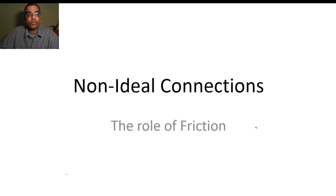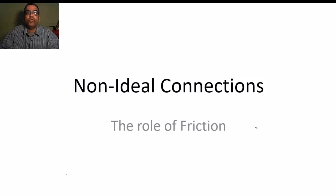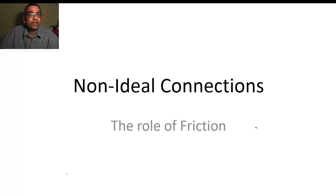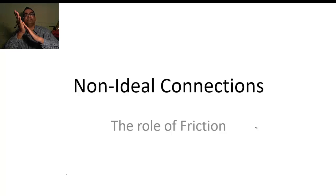Welcome back to MEEN 221. Today we are going to talk about non-ideal connections. Up to now we have been assuming that our connections are ideal — no friction. But in reality, every kind of connector that allows motion will have friction. Welded connections have no motion, so there is no question of friction. We are going to consider only one kind of connector with friction: sliding — when two things slide past each other in a sliding joint.